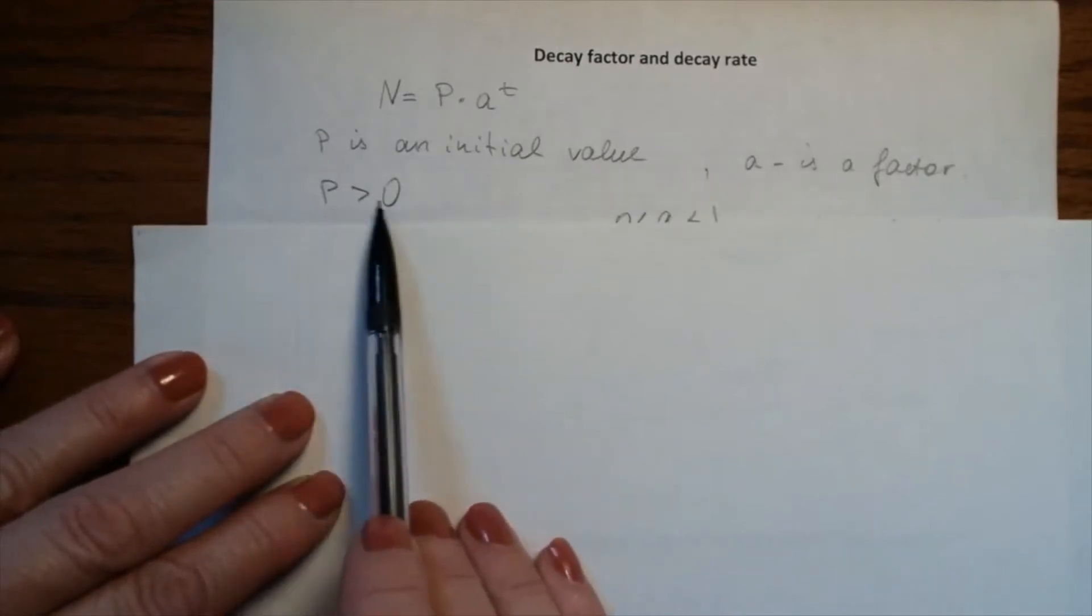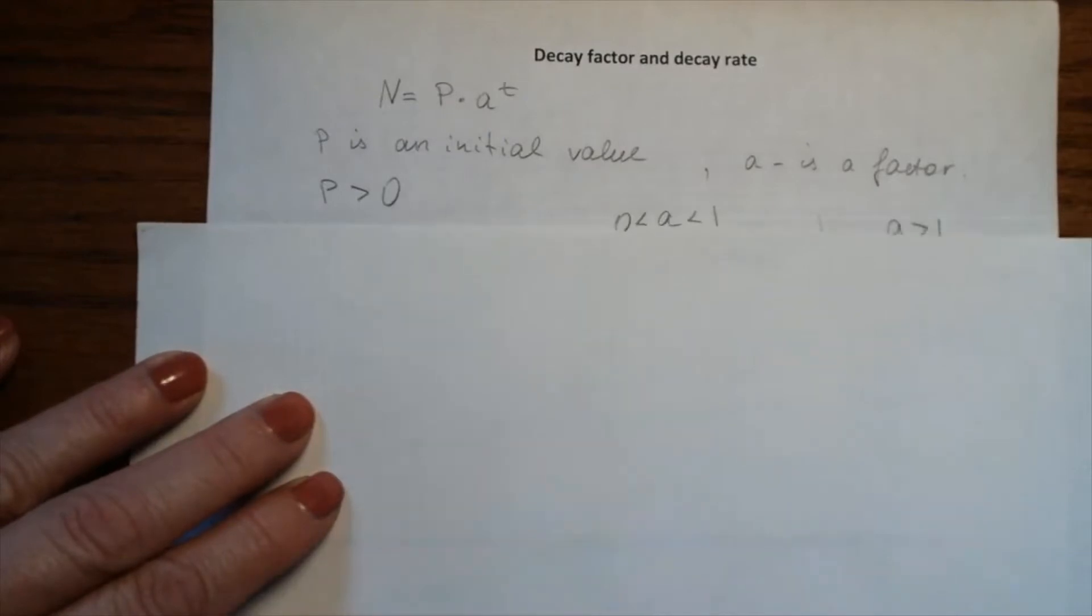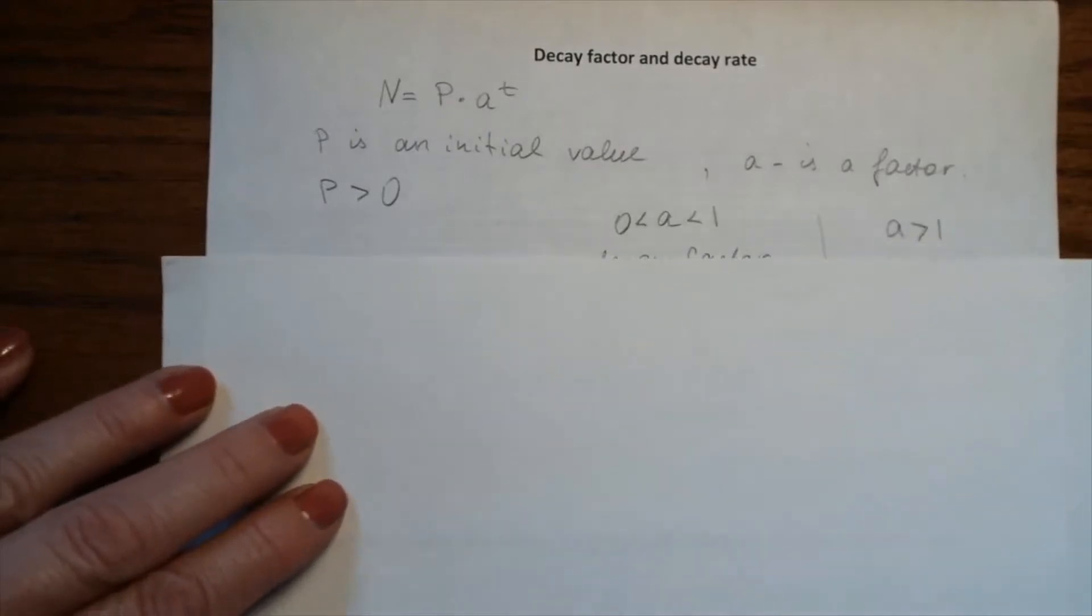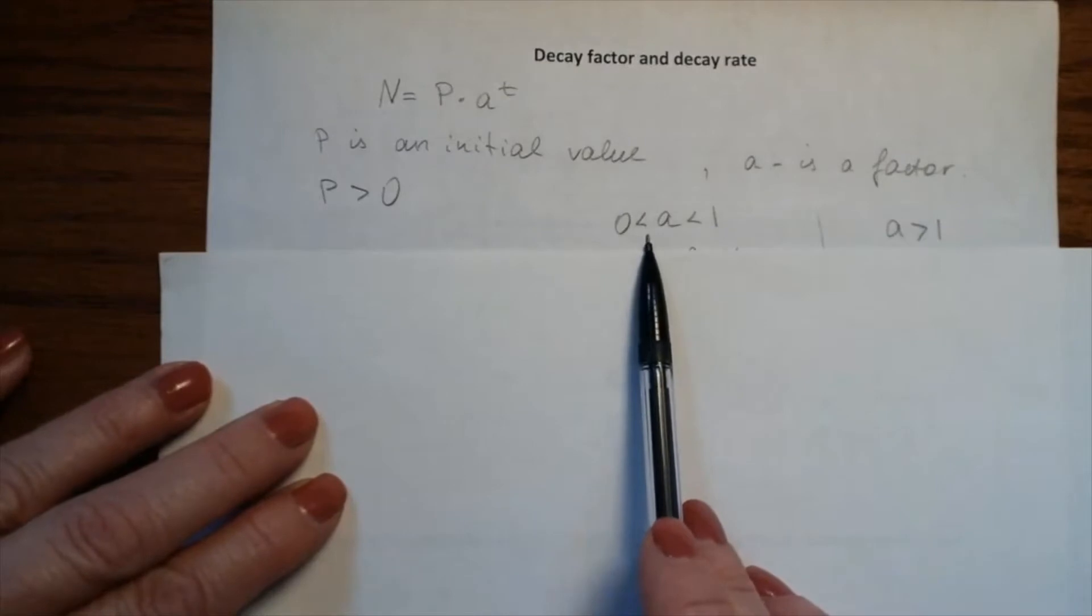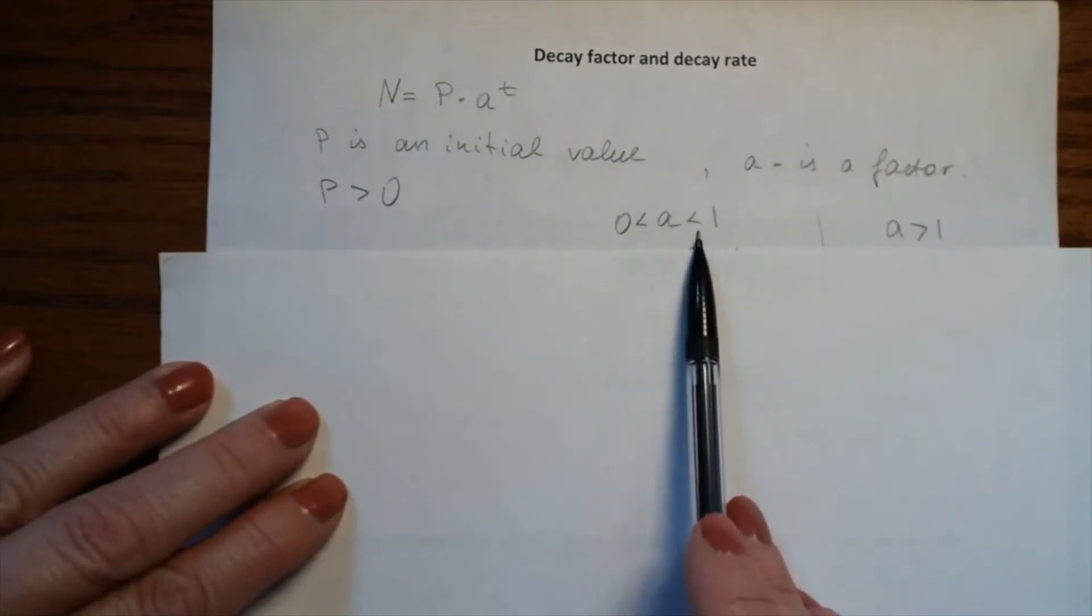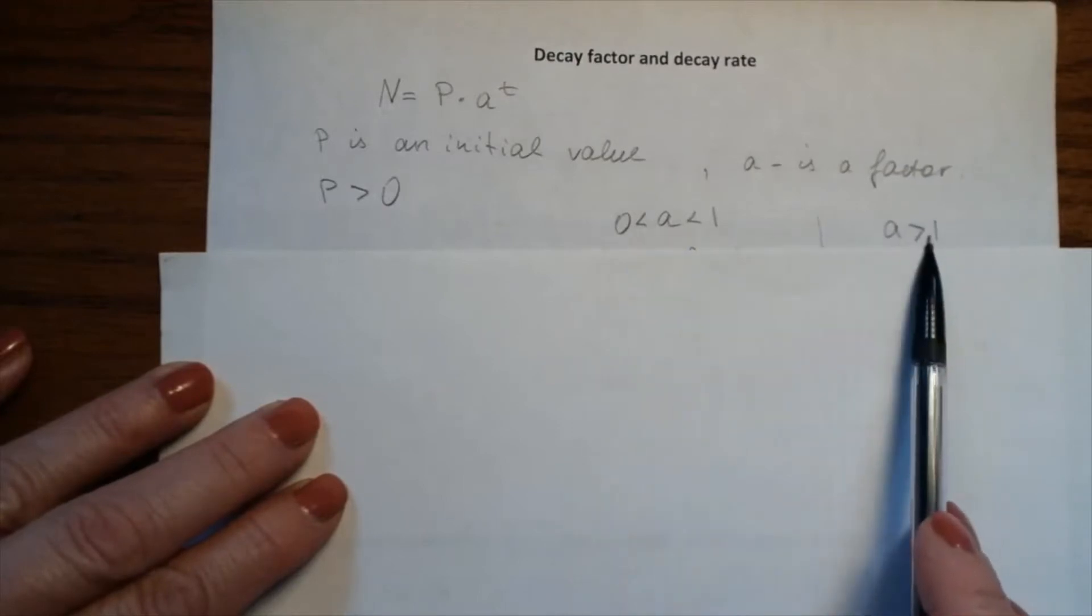The initial value always has to be greater than zero, but there are two cases for the factor a: a can be between 0 and 1, or a can be greater than 1.